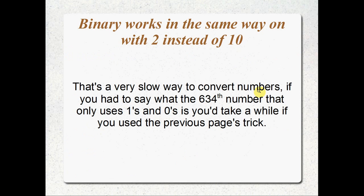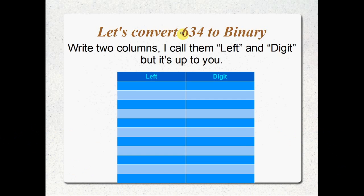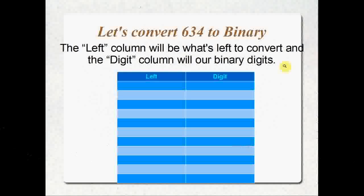That's one way to think about it but it's a really slow way. If you were on the street and someone asked you what the 634th binary number is, you'd be hard pressed to do it that way. So let's convert 634 to binary using an algorithm — a set of steps to convert a base 10 number into binary, which is much quicker. I like to write out two columns: I call them 'left' and 'digit'. The left column is what we've still got left to convert, and the digit column will hold our binary digits.